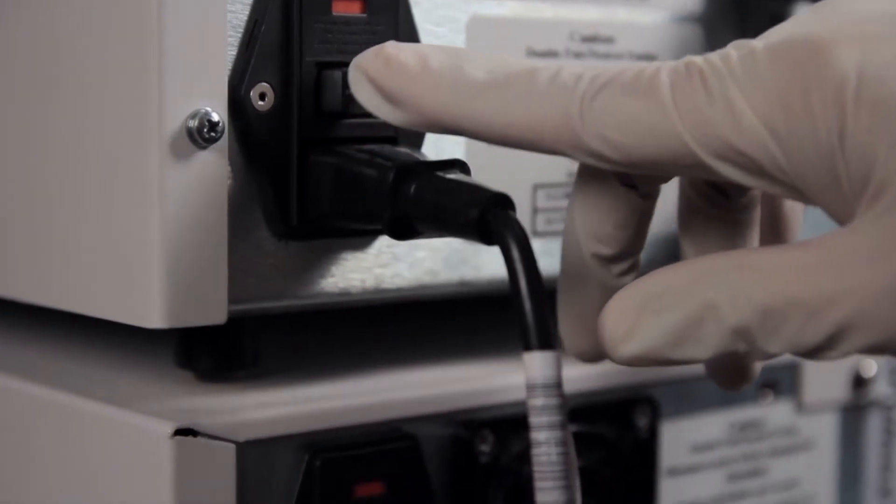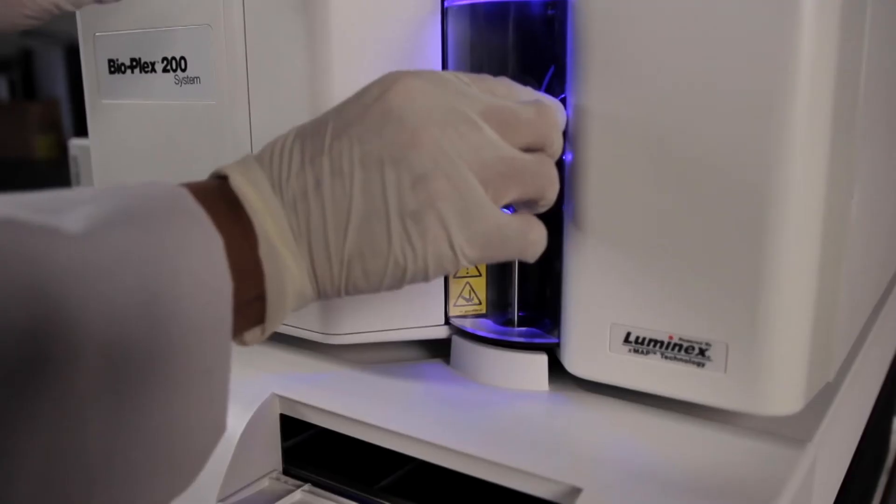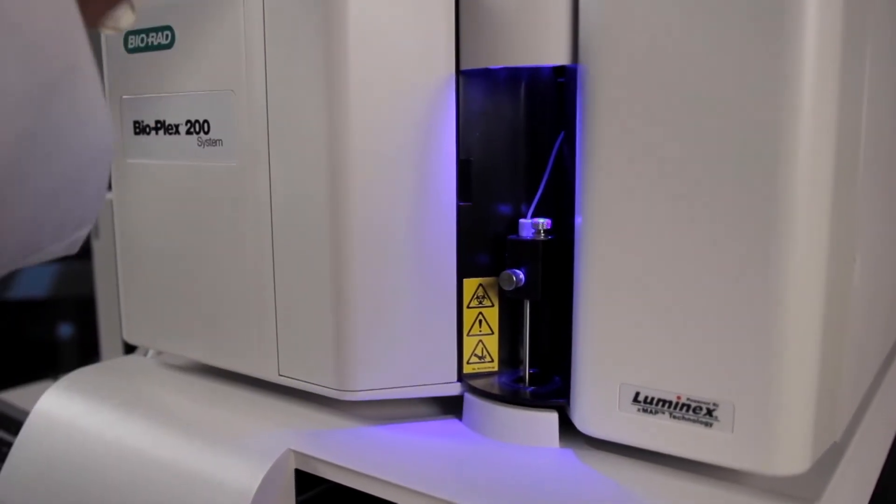First, always turn the power to the array reader off before removing or installing the sample needle. Now, remove the clear shield that covers the sample needle.